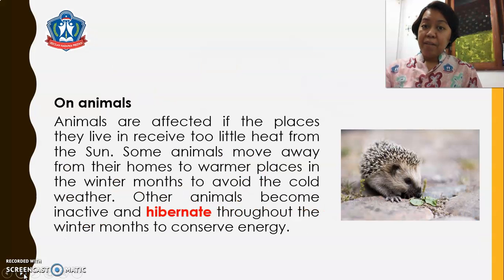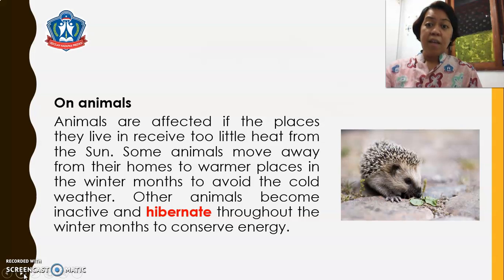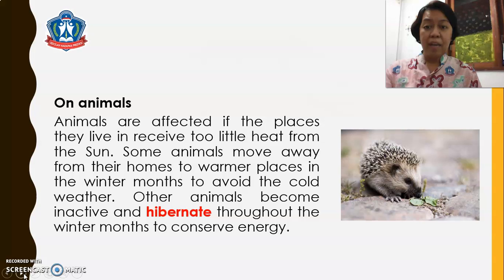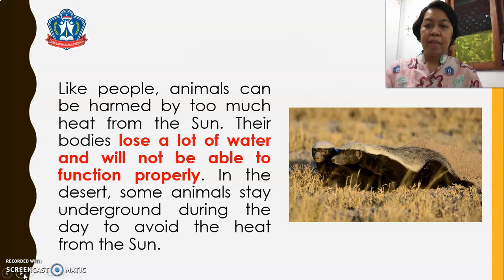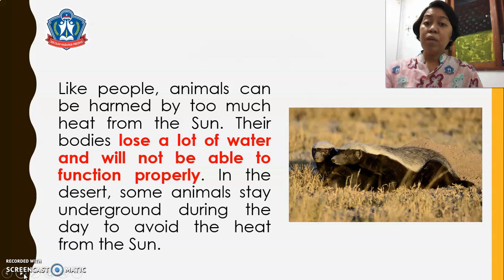On animals, animals are affected if the places they live in receive too little heat from the sun. Some animals move away from their homes to warmer places in the winter months to avoid the cold weather. Other animals become inactive and hibernate throughout the winter months to conserve energy. Like people, animals can be harmed by too much heat from the sun. Their bodies lose a lot of water and will not be able to function properly. In the desert, some animals stay underground during the day to avoid the heat from the sun.